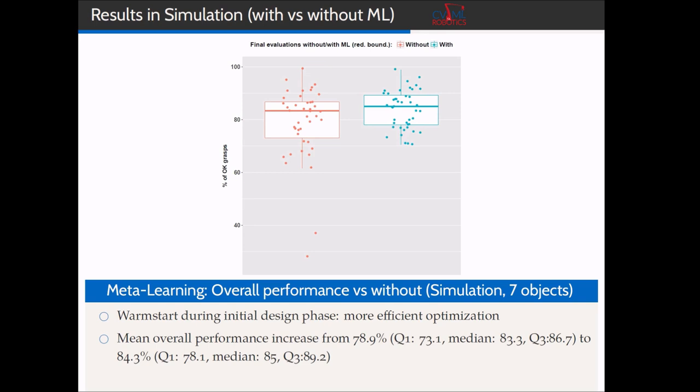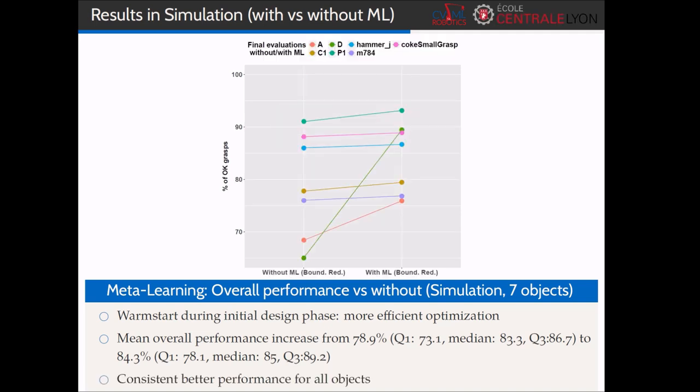Indeed, when we compare the overall final performance of the optimization for all the objects, we go from 78.9% to 84.3% with the meta-learning strategy, a statistically significant improvement. This is validated further, when considering the comparison of the final performance, object per object. We consistently achieve a better optimization when using meta-learning.